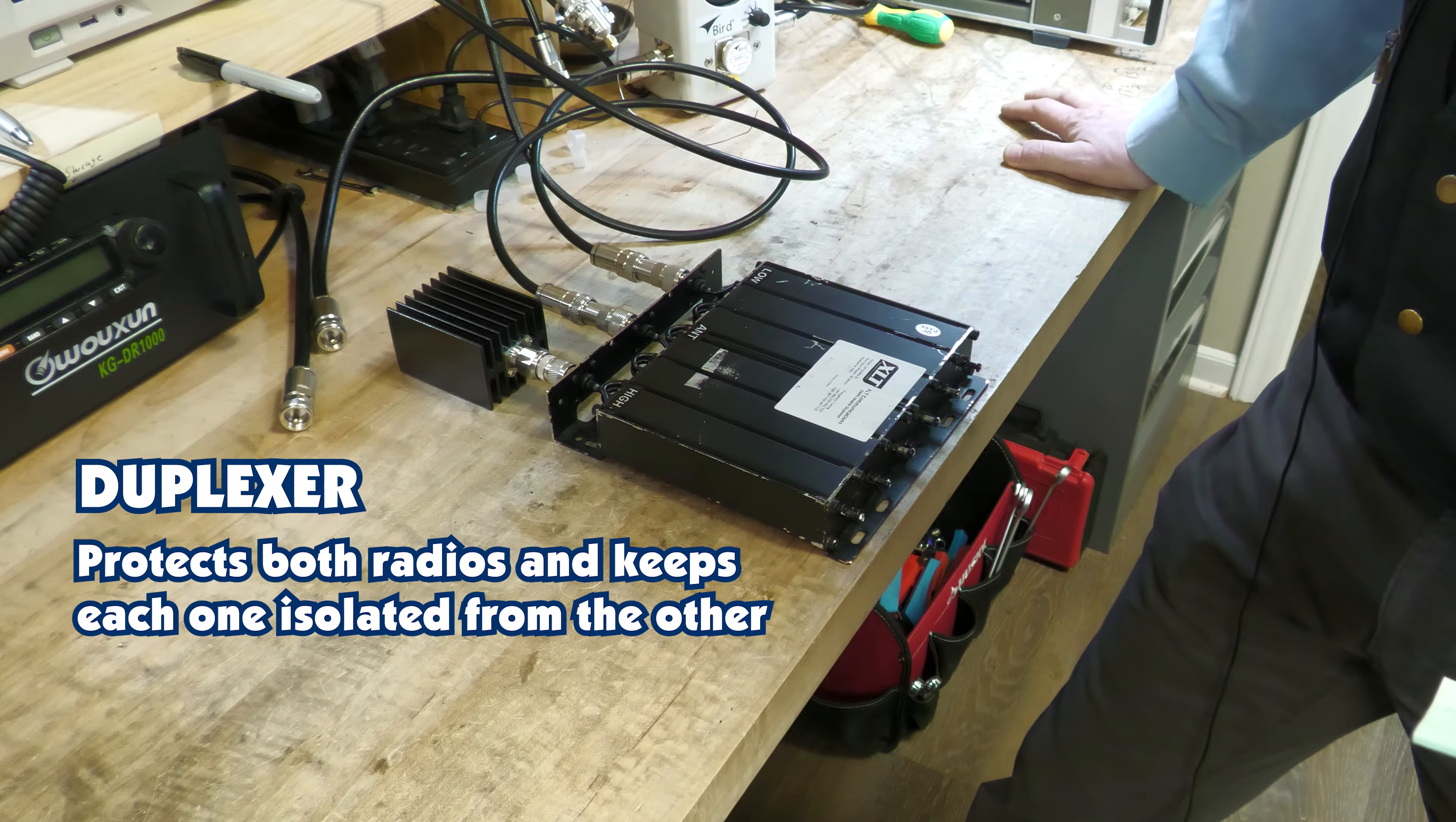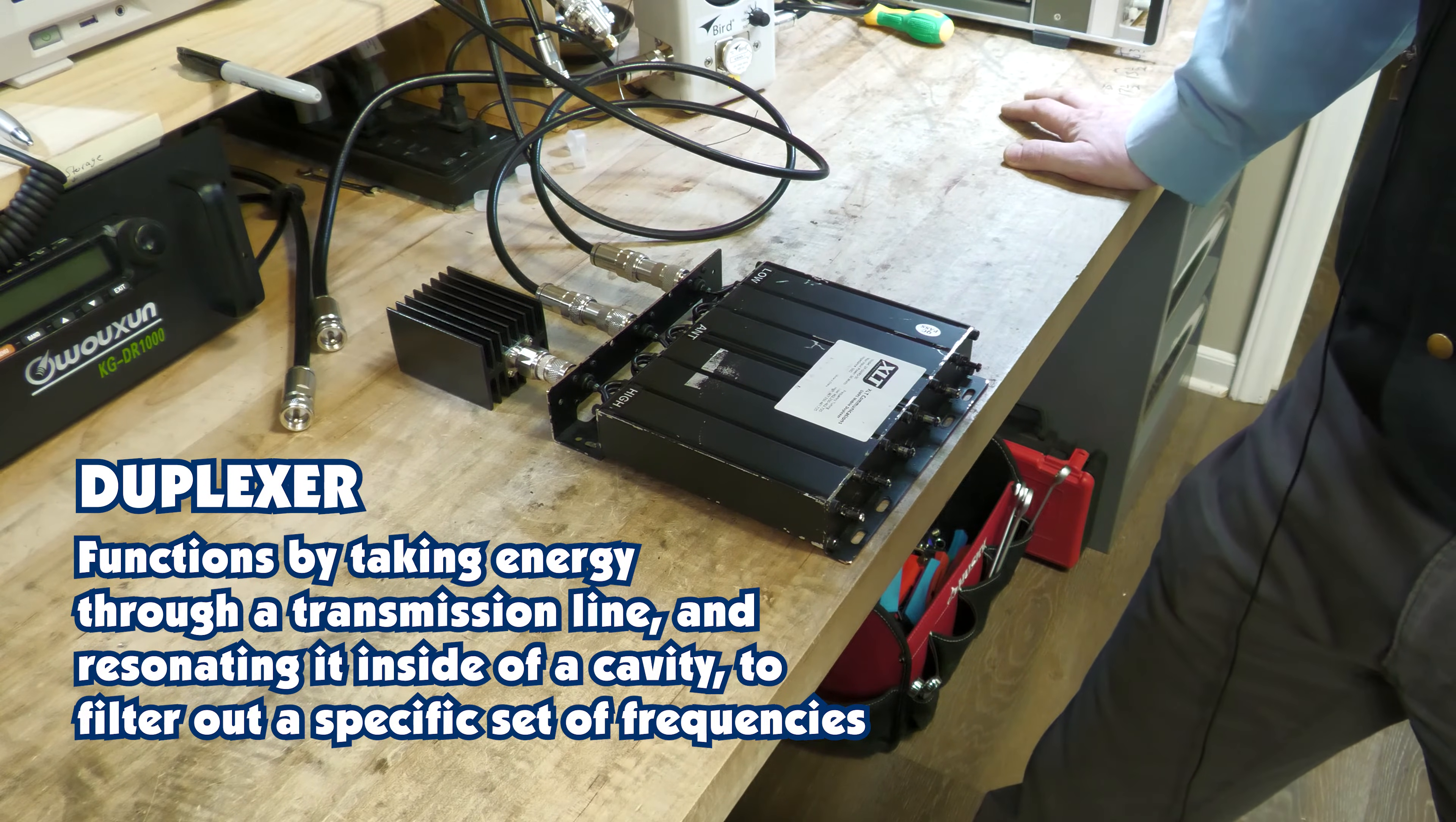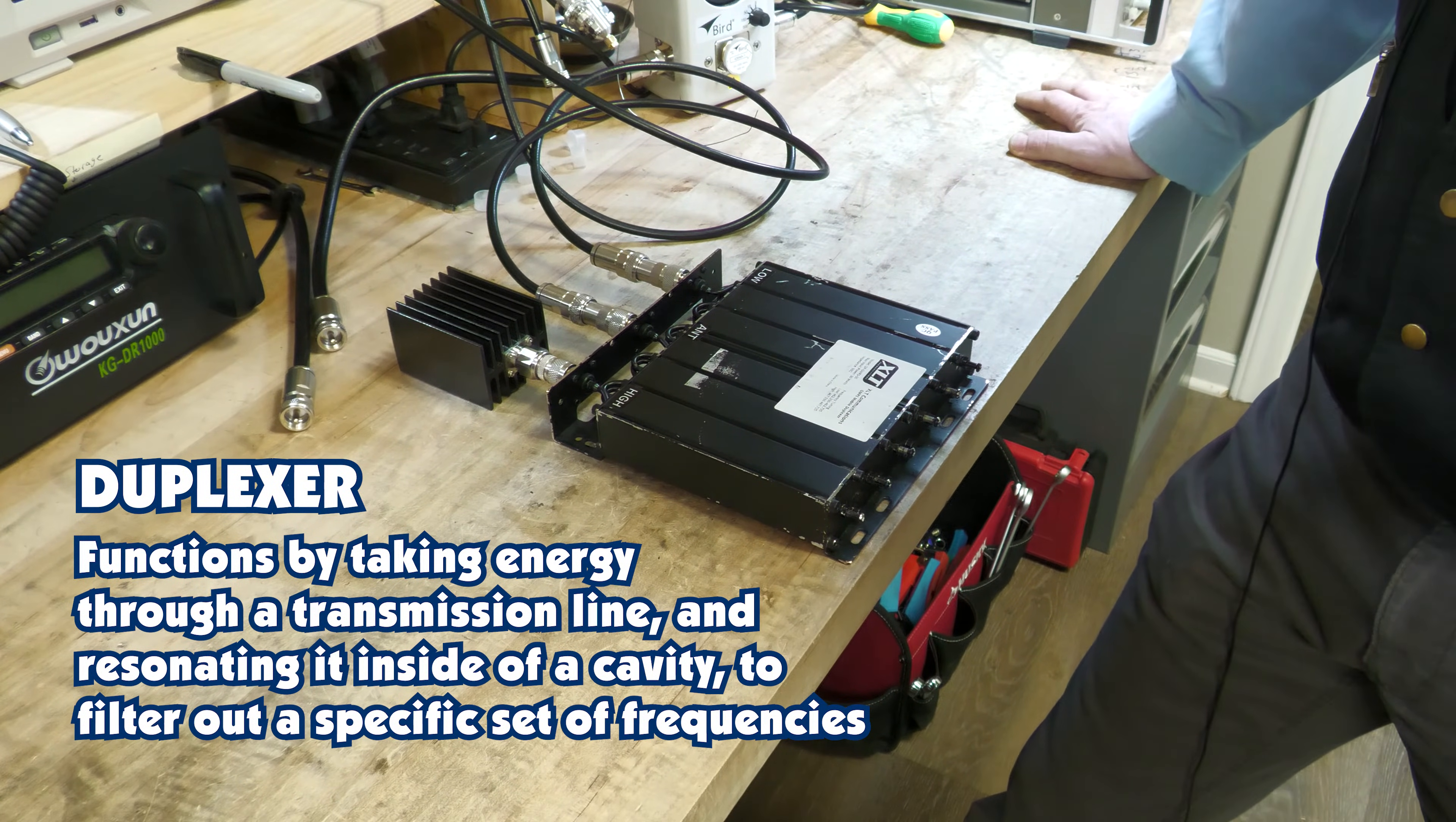A duplexer is primarily a passive device that ensures the quality of your transmission and provides the safety of your devices. How does it function? A duplexer functions by taking energy through a transmission line, resonating it inside of a cavity, particularly in the BP or BR type duplexers. When you're talking about a notch and a band pass filter and things like that, they basically act as a filter. But it filters out a very specific set of frequencies or it allows a very specific set or band of frequencies. It does that with coupling coils or taps and there's a few other ways that you can couple the transmission lines to the cavity in that resonating atmosphere.